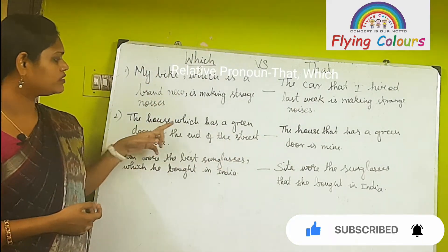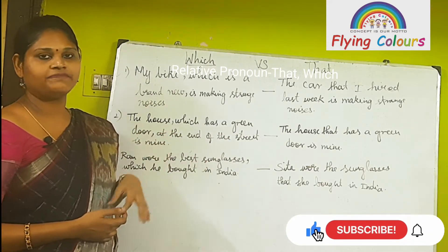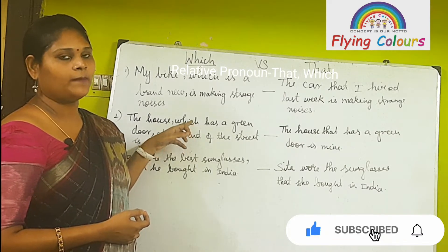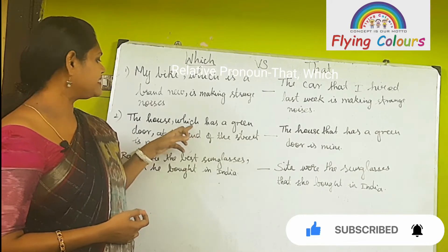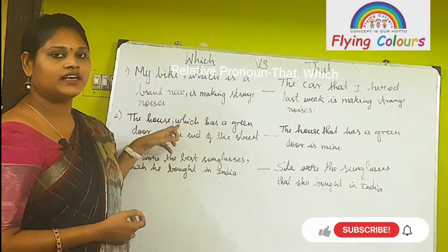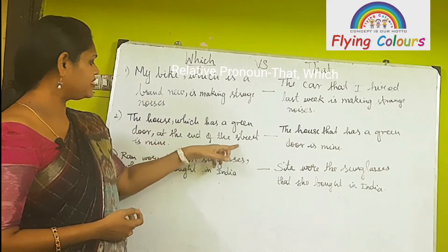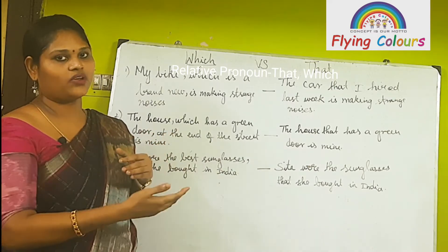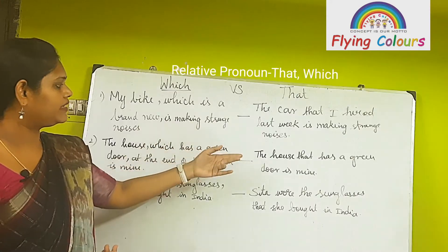'The house which has a green door at the end of the street is mine.' In that case, 'which' is a relative pronoun, but 'which has a green door' is non-essential information. Without it, the sentence still reads: 'The house at the end of the street is mine.' The sentence is complete without that non-essential clause.